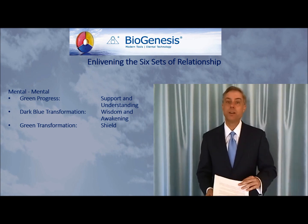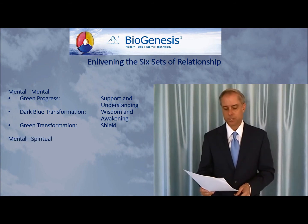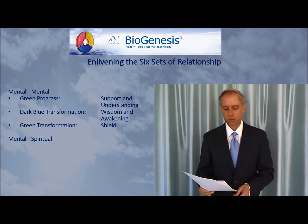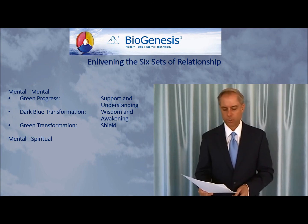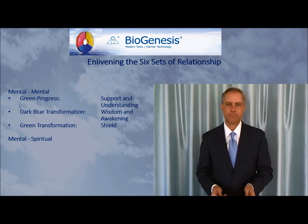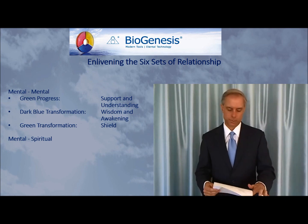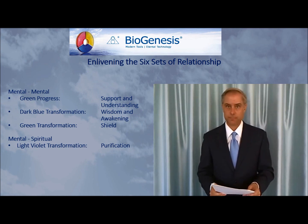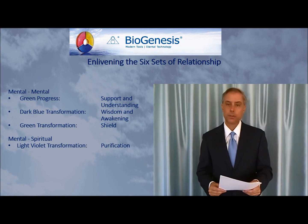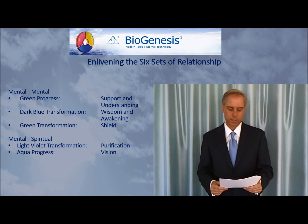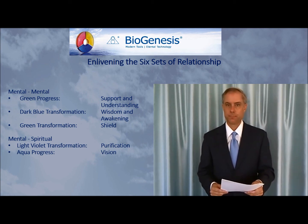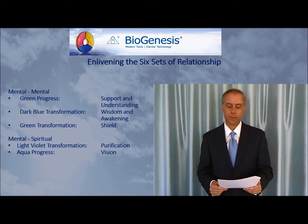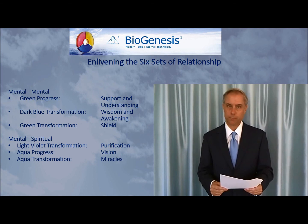Then we move on to the fifth set of relationship — the mental level relating to the spiritual level. Lanto said: all glories of the objective creation are open through the cultivation of this sublime level of relationship. Again we enliven three wheels: we begin with light violet transformation using the desire purification; then the aqua blue progress wheel using the desire vision; then we finish with the aqua blue transformation wheel using the desire miracles.